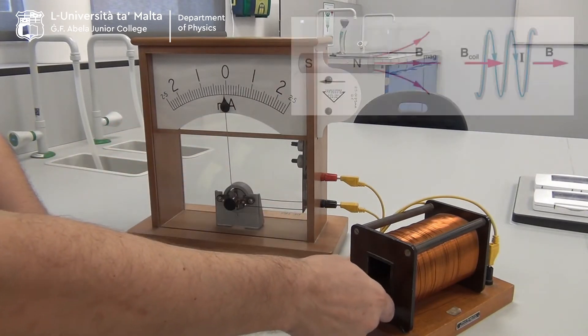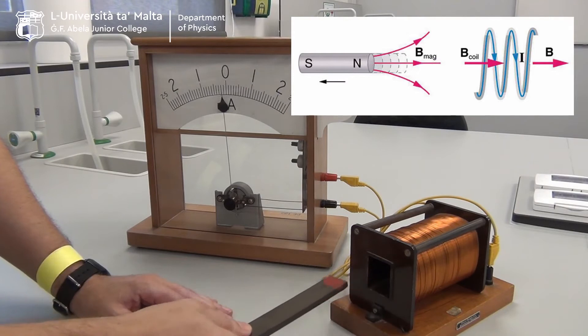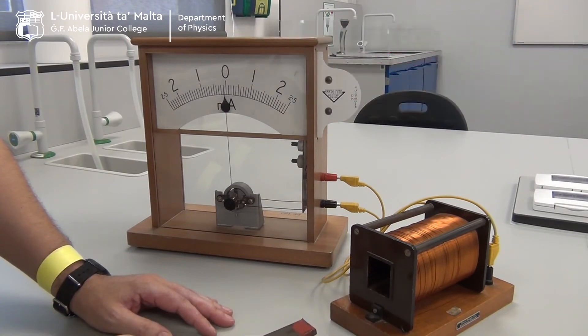As I pull the magnet out slowly, the deflection will be to the left, in the opposite direction than before.